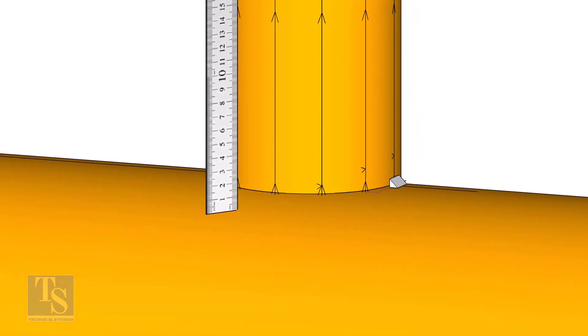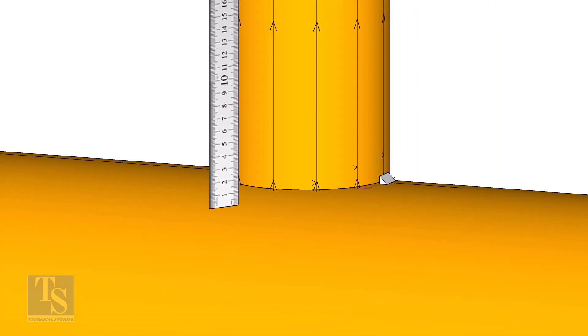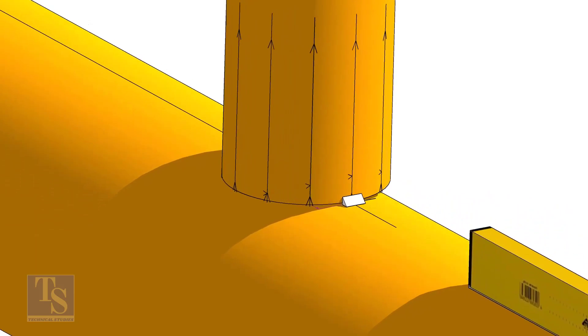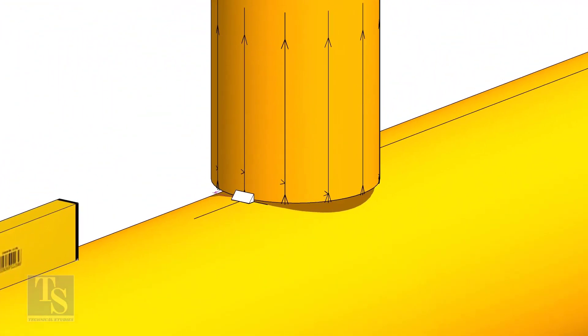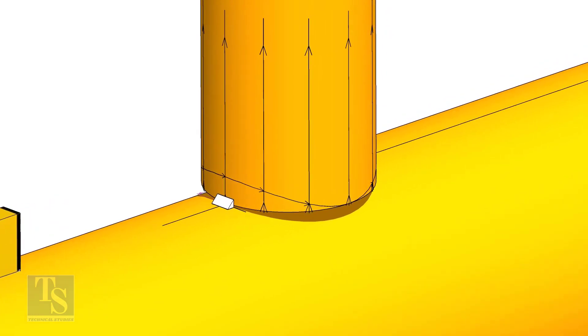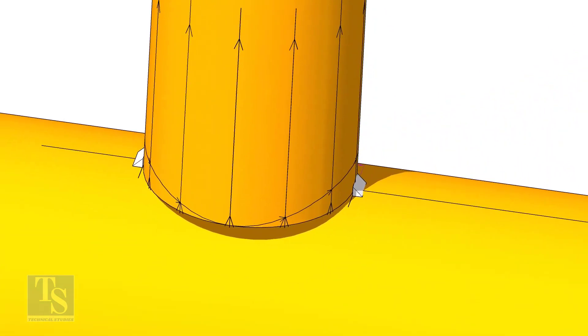Repeat the process and complete the marking around the branch pipe. Use a bend scale to make a smooth curve around the branch pipe.